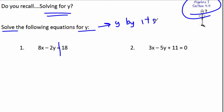And we do this a lot when we graph. And there's other reasons to do this too. But the first thing you want to do in number 1, we have 8x minus 2y equals 18. You have to get rid of that x term. So to do that, we're going to subtract 8x from each side. Remember the goal, we want to get y by itself.